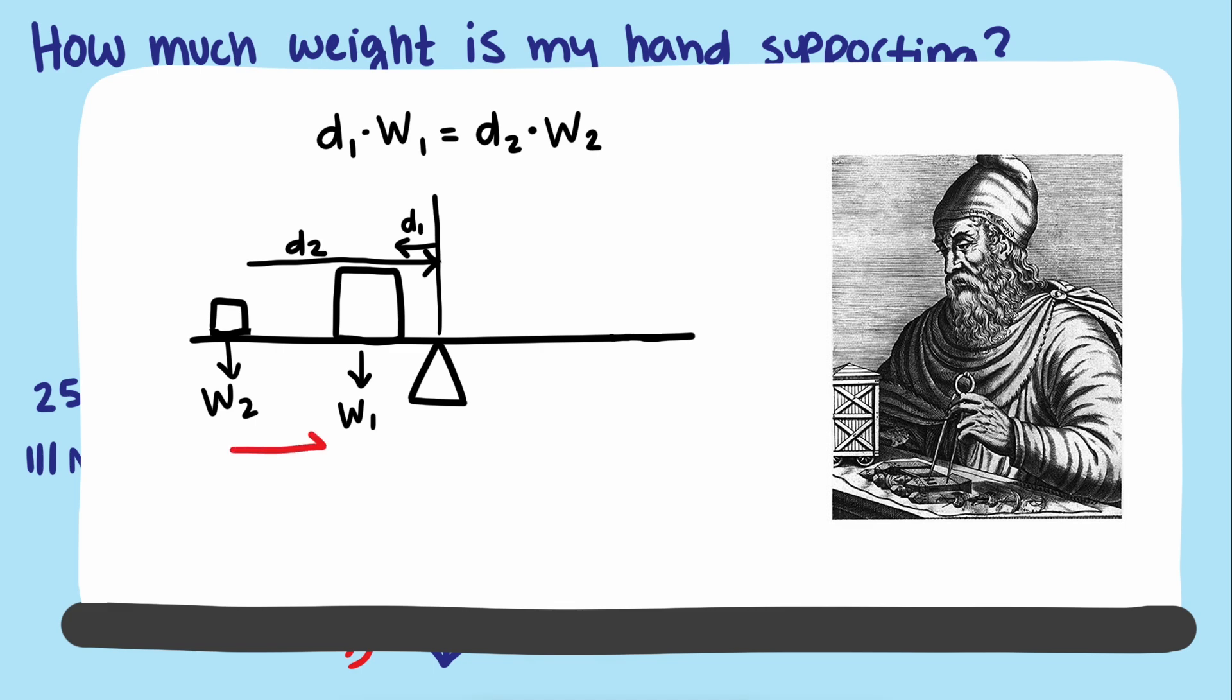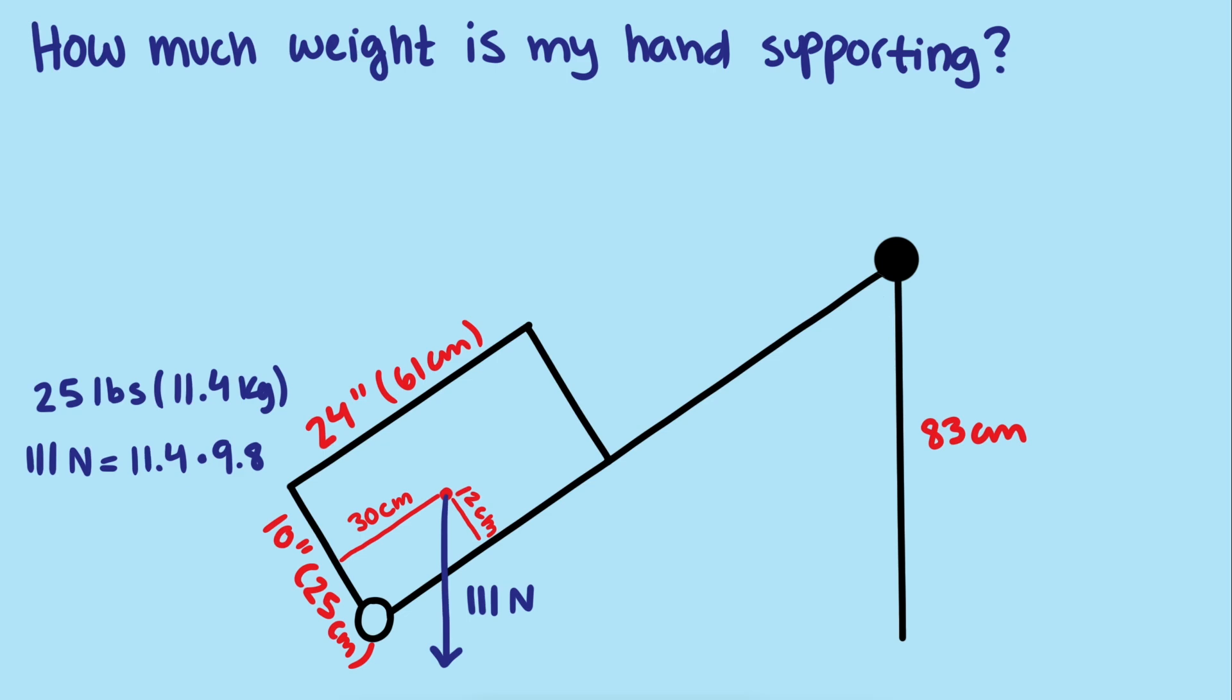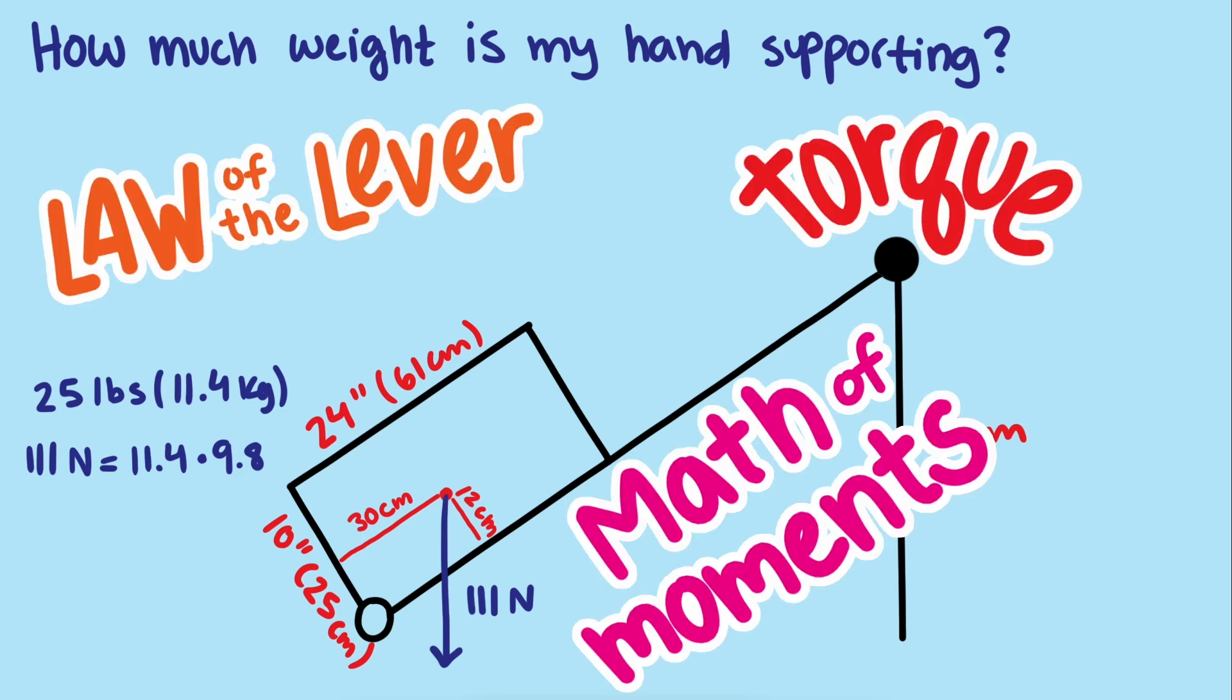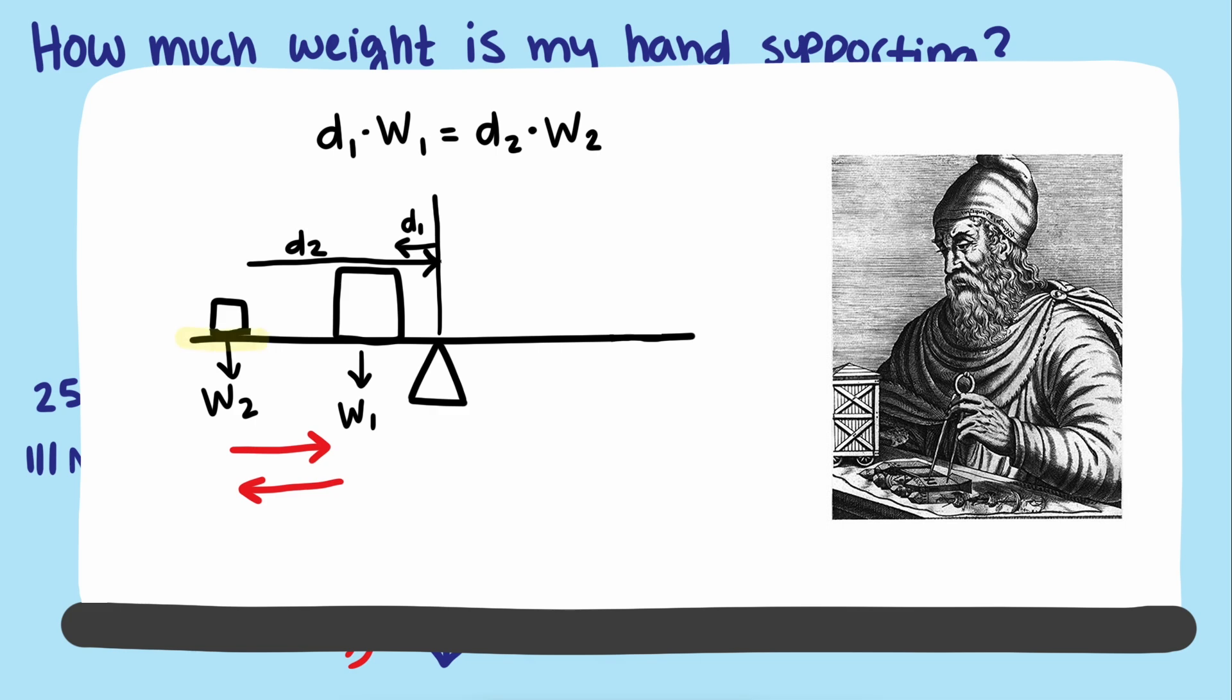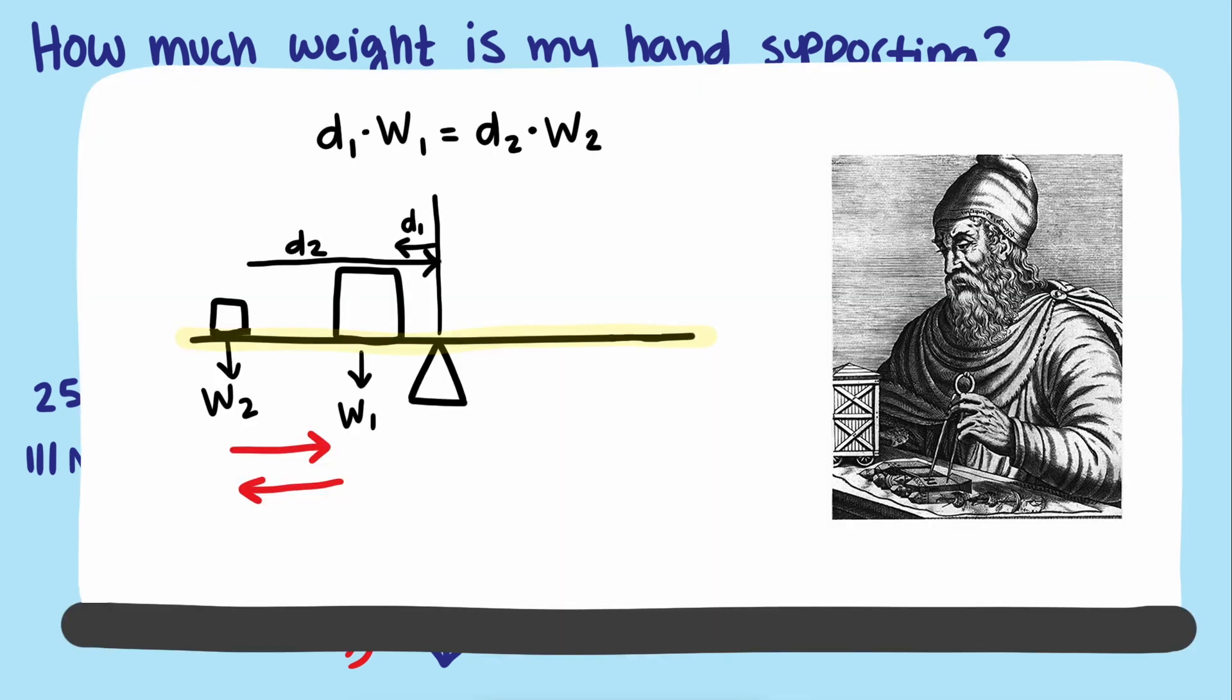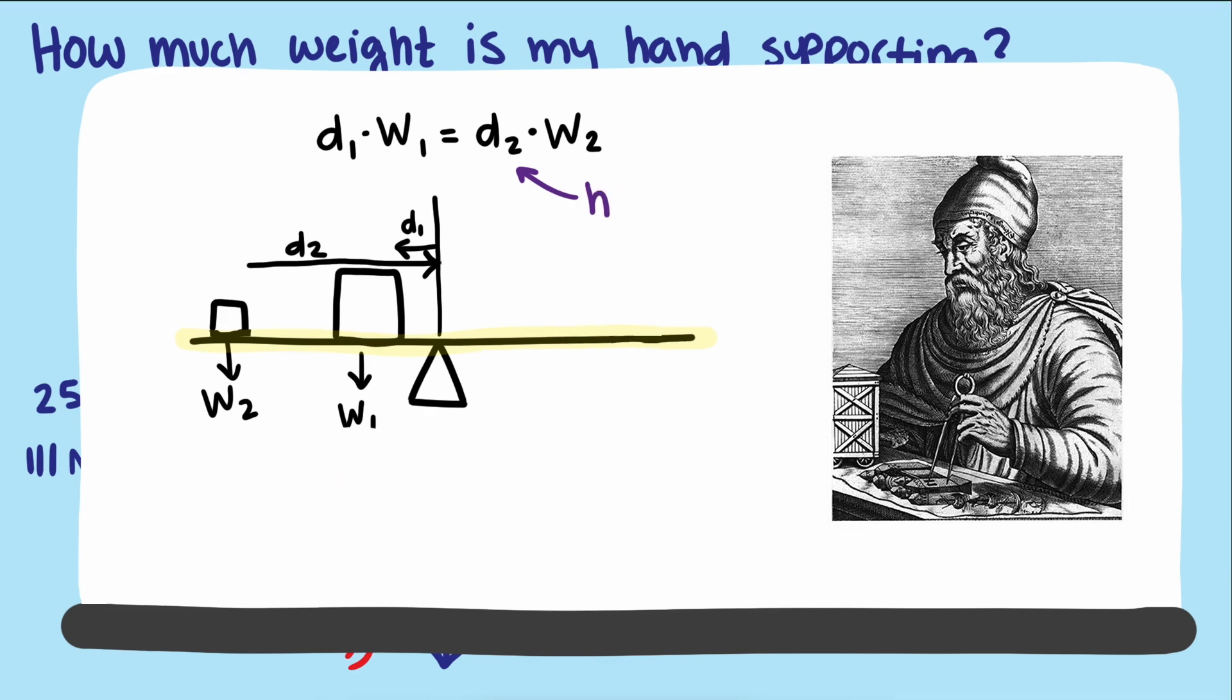The forces times their respective distances had to be the same. This math is often called the law of the lever, or torque, or the math of moments. But we don't have a horizontal bar. We have a bar at an angle. And that changes things. But luckily we can generalize the idea using trigonometry. Instead of this equation for a horizontal bar, physicists use this equation,